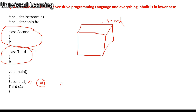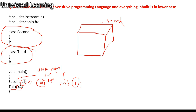It is very similar to 'integer i' — i belongs to data type int. Similarly, the class 'second' is a user-defined data type. In the same way you can create S1 as an object of data type class second, and you can create object S2 of class third.